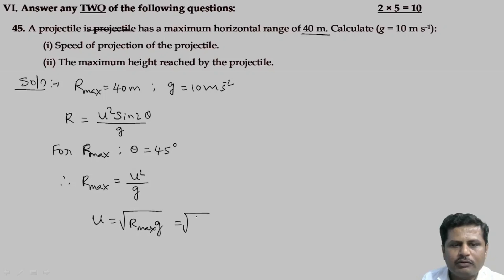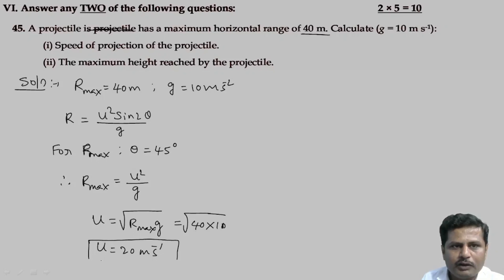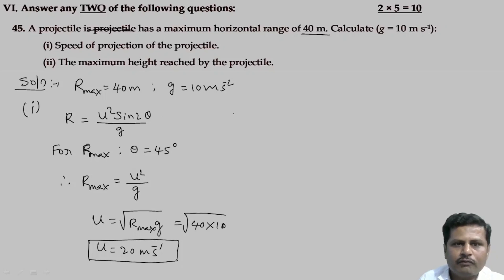Substituting the values: u equals square root of 40 into 10, which is square root of 400, that is 20 meters per second. This is the speed of projection of the projectile.